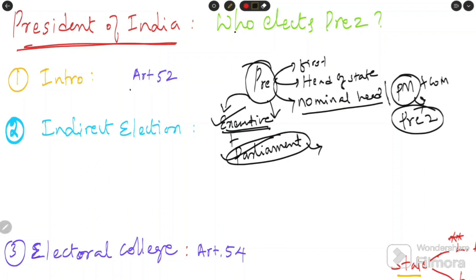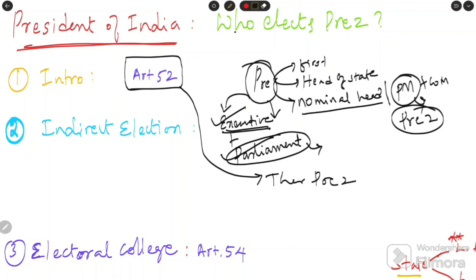Now, there is Article 52 in the Constitution of India. Article 52 says there shall be a President of India — meaning India must and should have a president at any cost. India cannot be without a president; the presidential office must be occupied at any time. This is the constitutional mandate.